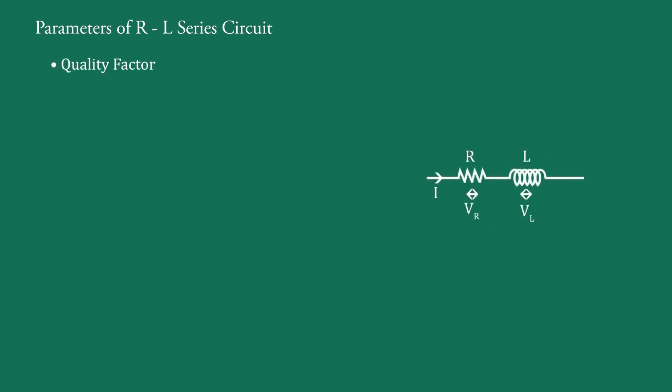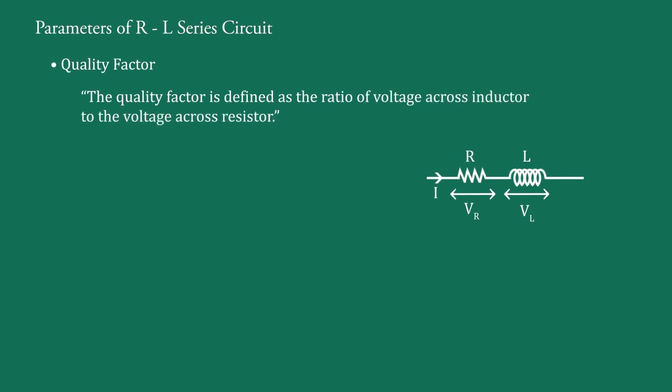Now, quality factor, that is Q. The quality factor is defined as the ratio of voltage across inductor to the voltage across resistor. That is Q equals VL upon VR. Current through the circuit is I and therefore, Q equals I into XL upon I into R and which is equal to I into omega L upon I into R.